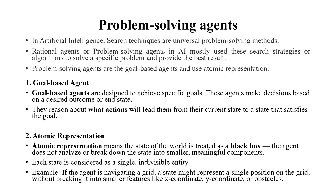In artificial intelligence, search techniques are universal problem solving methods. We have seen in the first unit that every agent in the background runs the search algorithm. Rational agents or problem solving agents in AI mostly use these strategies or algorithms to solve specific problems and provide the best results.